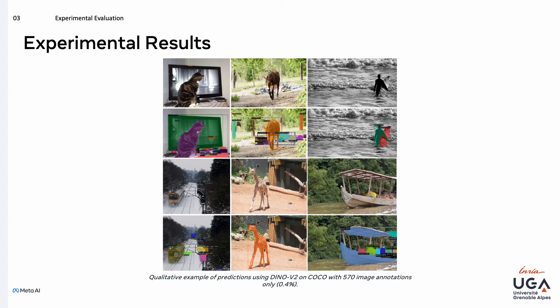In this figure, we can see predictions given by a model equipped with the DINOv2 backbone and trained using our method with only 0.4% of labels from COCO, which corresponds to about 570 labeled images. Even in such an extreme setting, the model still learns to generate high-quality segmentations and coherent class predictions.